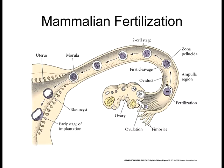After ovulation, the oocyte is in the middle of metaphase II and then gets fertilized. It finishes meiosis II, ejects one of the nuclei — the polar body — and retains the last one. Those nuclei then fuse and the embryo starts going through cleavage, gastrulation, and eventually implantation into the uterus.